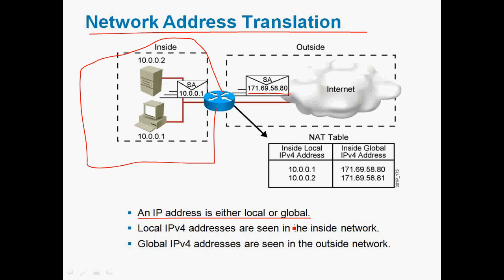Inside the local network we use only private IP addresses. For Class A, the private IP address range is 10.0.0.0 to 10.255.255.255. For Class B, the private range is 172.16.0.0 to 172.31.255.255. For Class C, the private IP address range is 192.168.0.0 to 192.168.255.255.